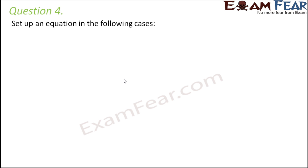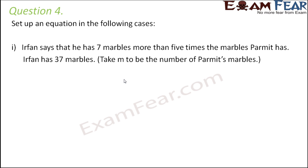Question number 4. Set up an equation in the following cases. Irfan says that he has 7 marbles more than 5 times the marbles Permit has. Irfan has 37 marbles. Take m to be the number of Permit's marbles. So as per our step 1, Permit's marbles is something that we do not know, so we assume it to be a variable. Here the question says let us assume it as m. Perfect. Now our second condition is to establish the criteria.